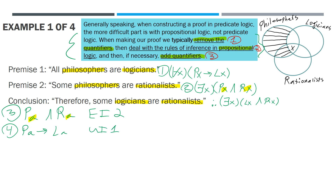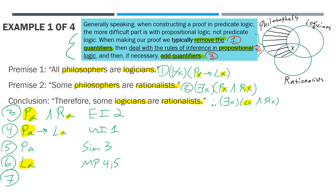Now we can work on the first premise — it deals with everything; x can be anything whatsoever. So it follows that we can substitute a for x. We'll say pa arrow la by the universal instantiation of line one. The previous video went over universal instantiation and universal generalization. We substitute a for x — it's the only way we can relate lines three and four. Now notice that we have pa in line three, and pa appears in the antecedent of a conditional. So for line five, let's get pa by the simplification of line three. And then for six, we can get la by modus ponens with lines four and five.